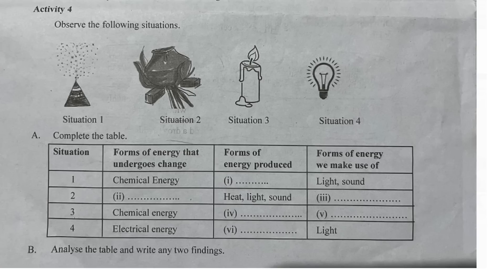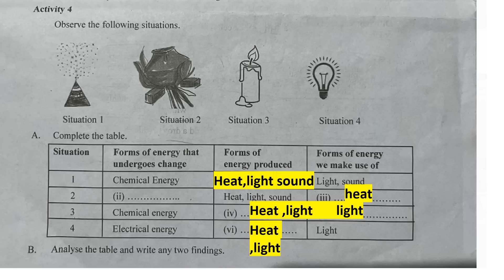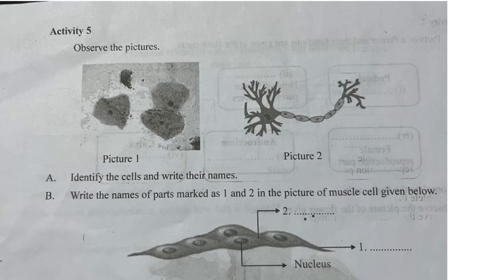Observe the following situations. Fire cracker: chemical energy is converted into heat, light and sound. The second situation: chemical energy is converted into heat and light. The third situation: chemical energy is converted into heat and light. The fourth situation: electrical energy is converted into heat and light.